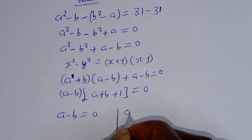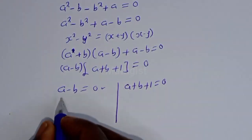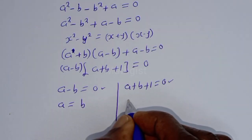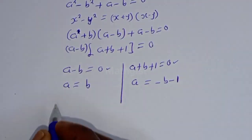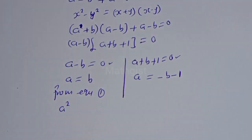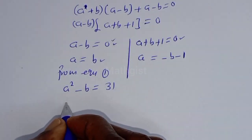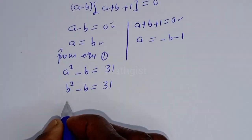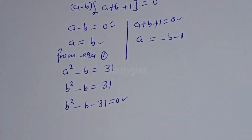From the first case, a = b. From the second case, a = -b - 1. For Case 1, substituting a = b into equation 1: a² - b = 31 becomes b² - b = 31, so b² - b - 31 = 0. This is a quadratic equation.